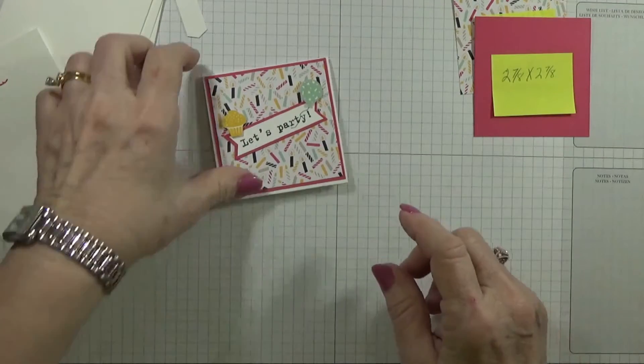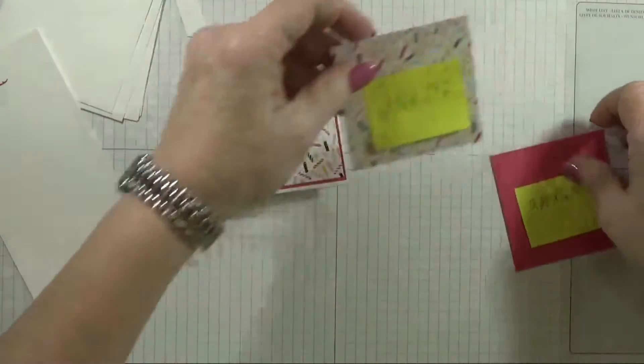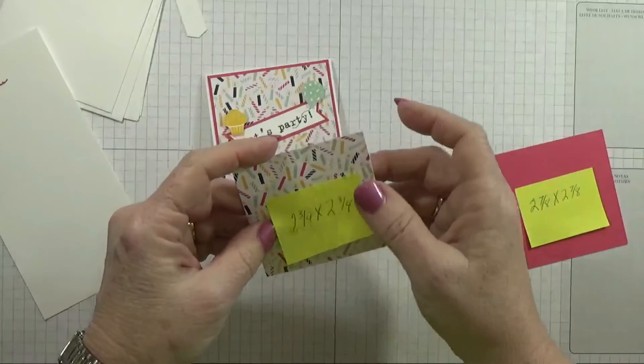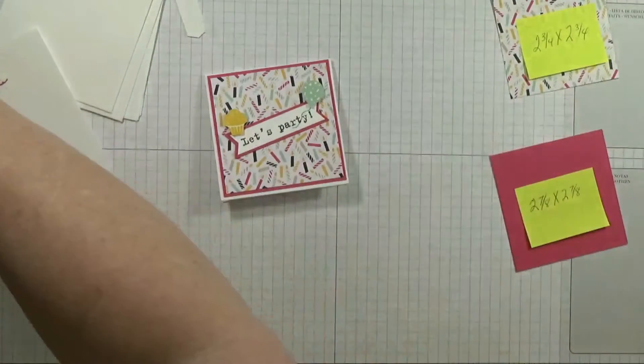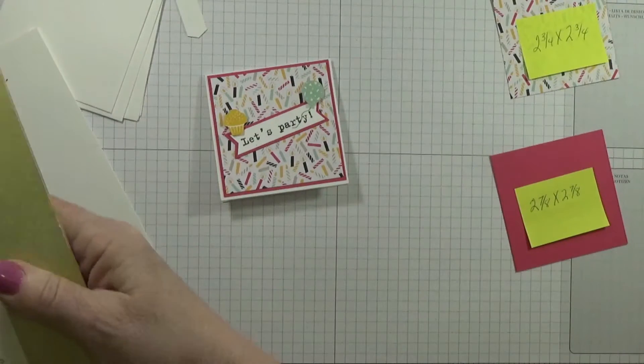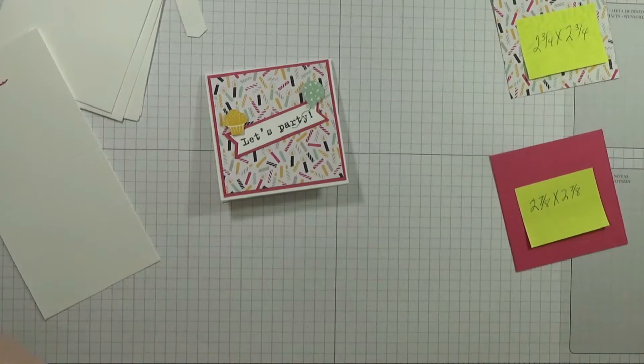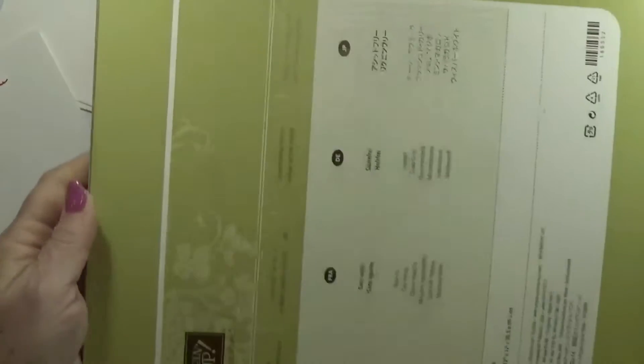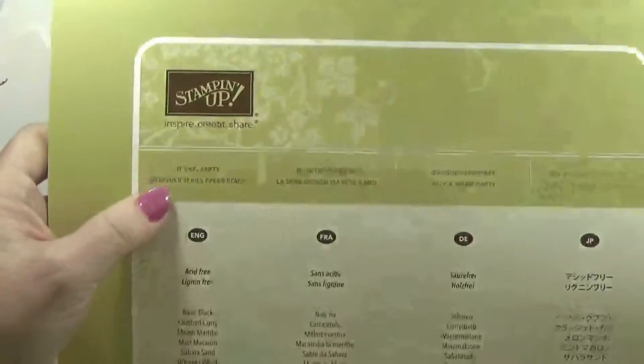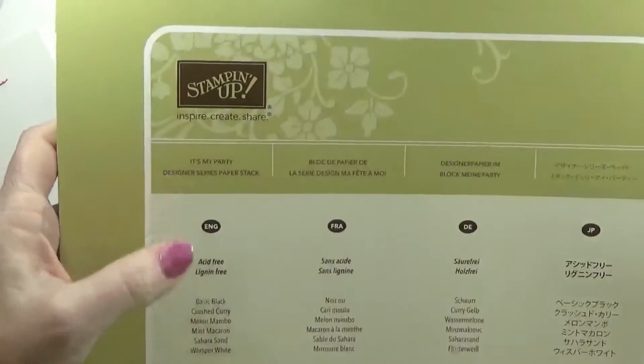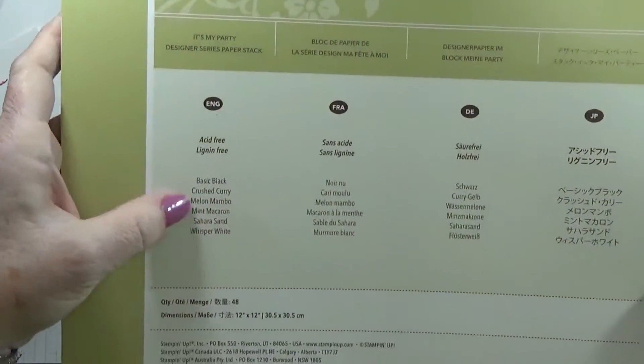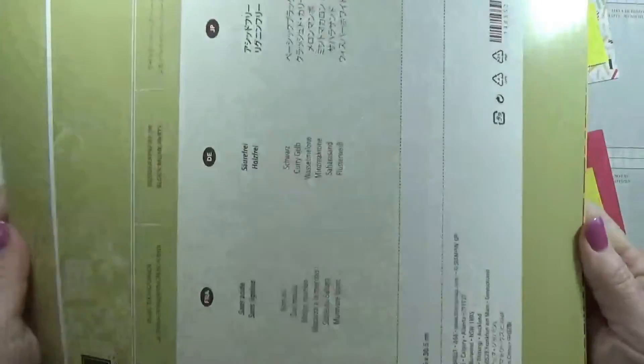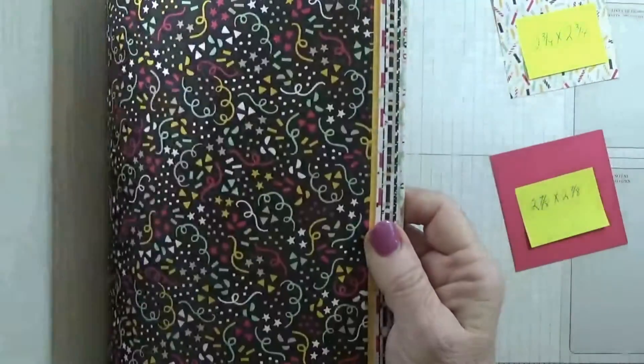And this paper right here is from It's My Party Designer Series Paper Stack, that is 12 by 12 paper. It's one of the bigger sets. It's My Party, they tell you all the colors that it has in this set. There's four each of each design and they're double-sided.